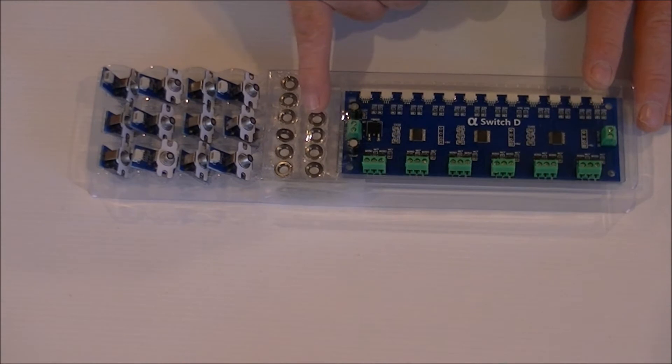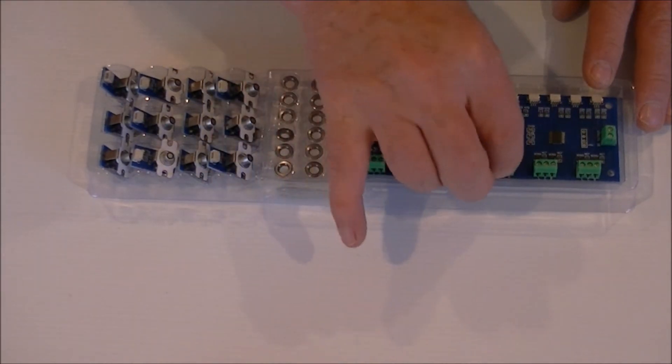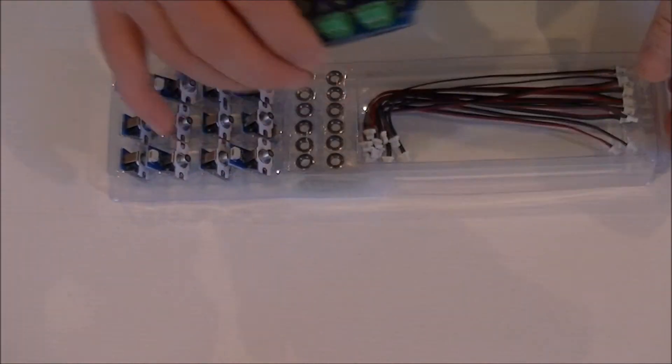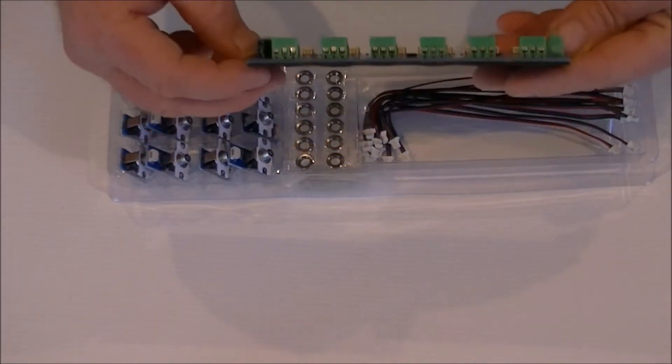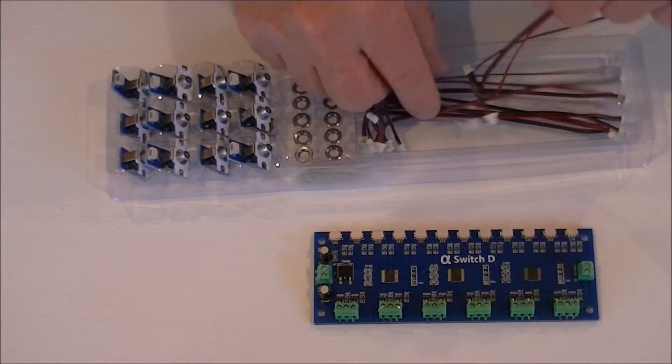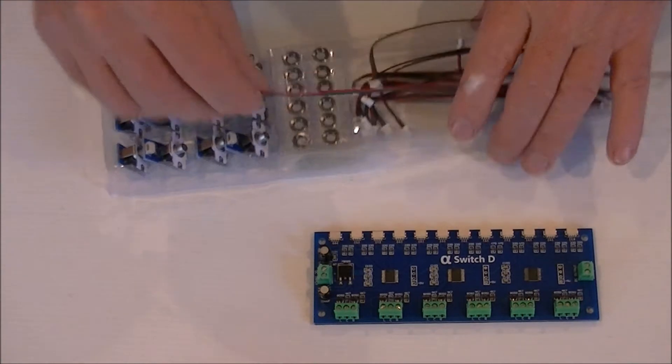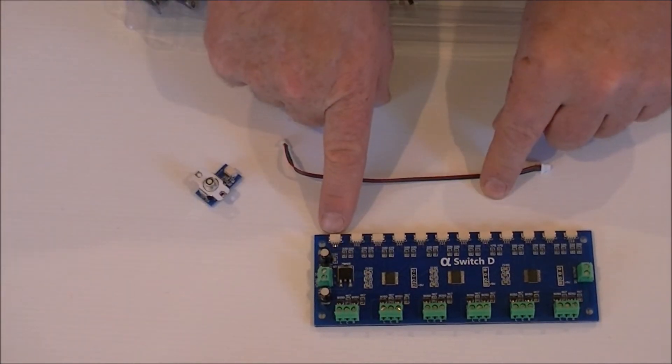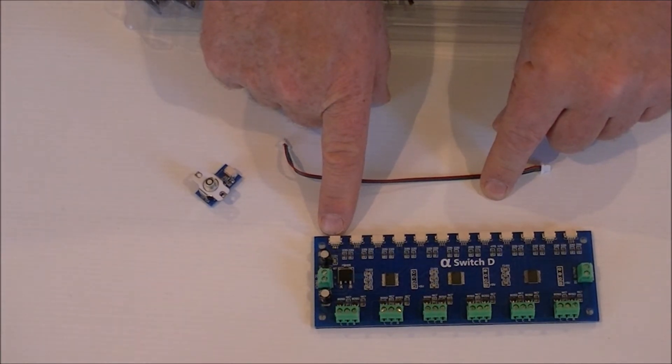You have 12 switches. You have 12 little surrounds just to make your control board look a little neat, and then you have the controller. Underneath the controller is the wires that these go between your switch.